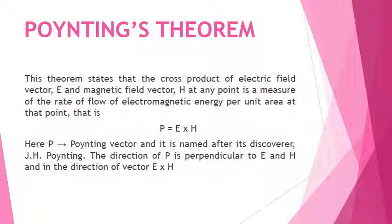Today we are going to learn about Poynting's Theorem. Poynting's Theorem states that the cross product of electric field vector E and magnetic field vector H at any point is a measure of the rate of flow of electromagnetic energy per unit area. It is given as P equal to E cross H, where P is the Poynting vector, E is electric field intensity, and H is the magnetic field intensity.